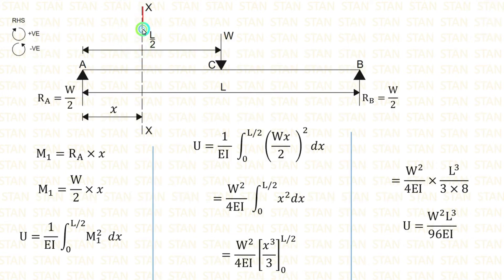Now, let us make the section XX at the distance of X. Let us calculate M1 which is equal to RA into X. We are moving towards the right-hand side, clockwise will be positive, anticlockwise will be negative. RA is acting towards the section in the clockwise direction, so it will be positive and the distance is X. So, RA into X.